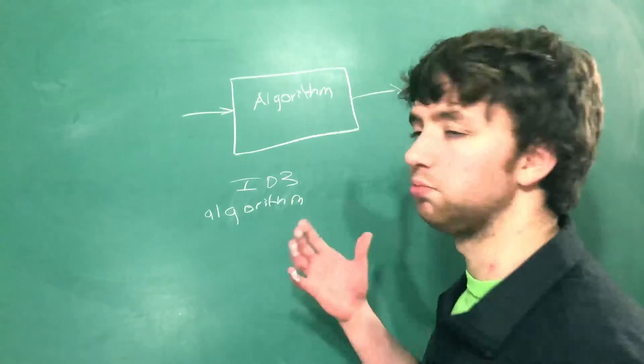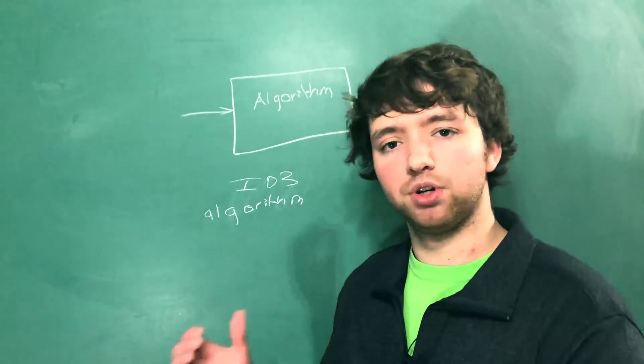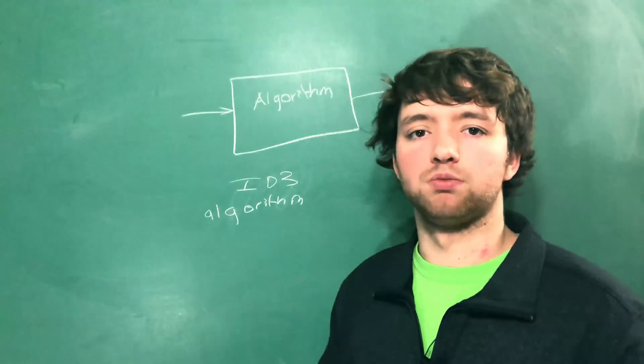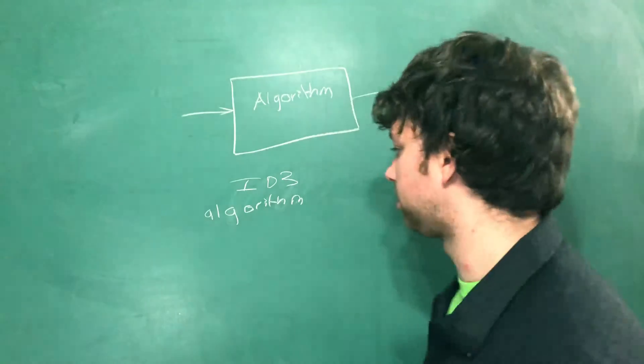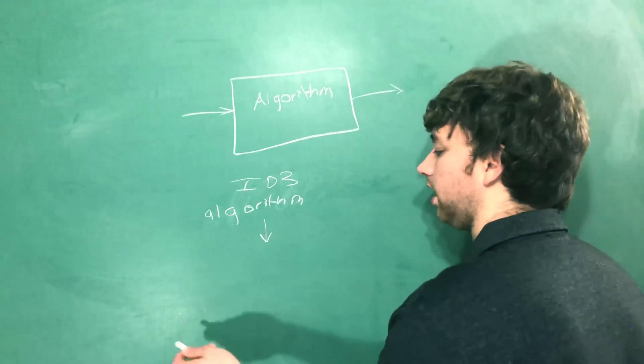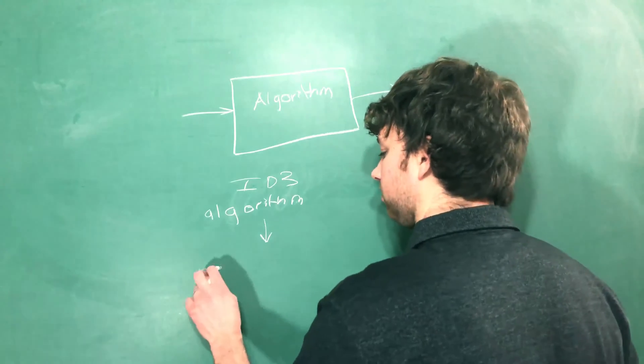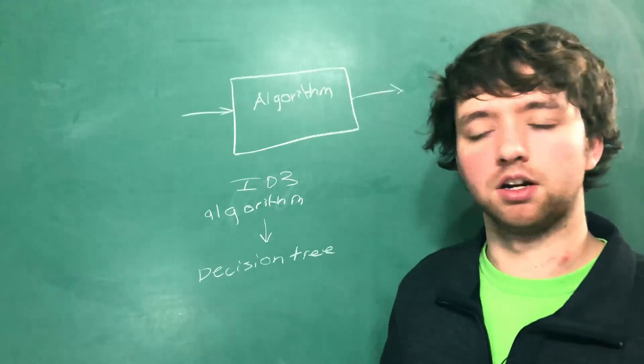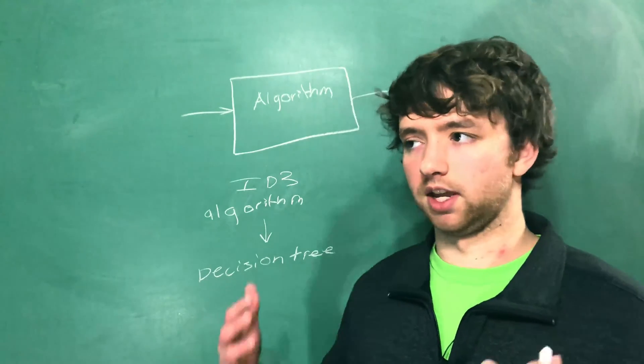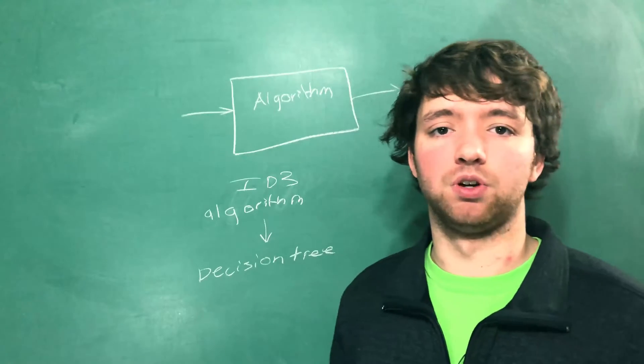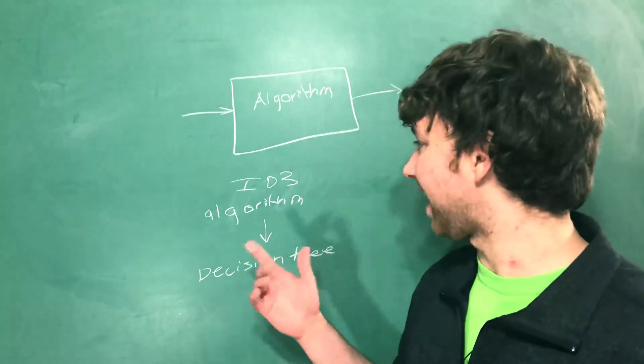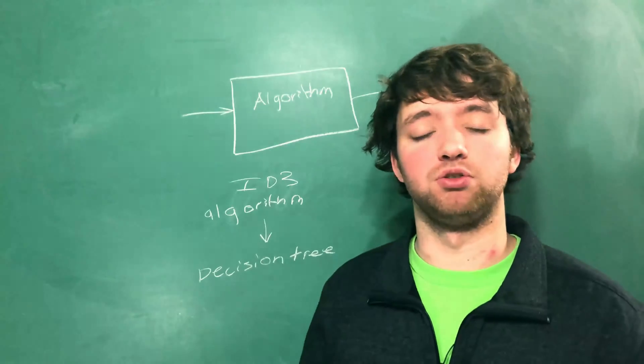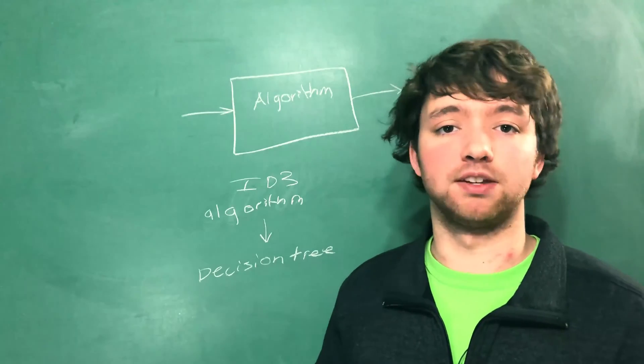And this is going to process our data. And the output of this algorithm is what we would call our model. So the output is going to be a decision tree. The decision tree is basically a way we can represent our data. You can also think of it as like the very complex if statement. That is one way to model our data. The ID3 algorithm is essentially going to create that very complex if statement.